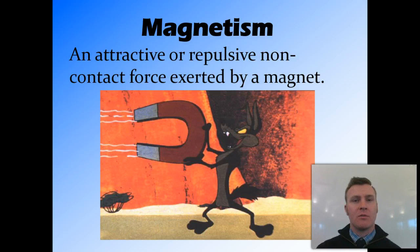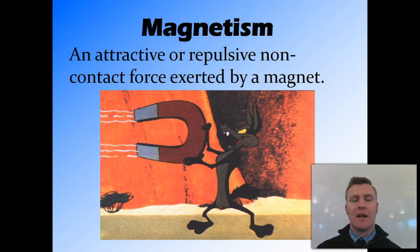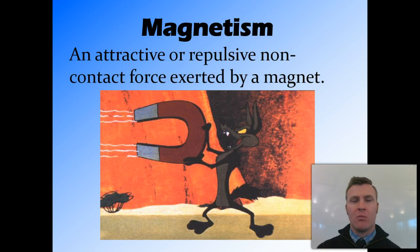Going a couple of videos back, we talked about contact forces and non-contact forces. Magnetism is an example of a non-contact force that can work as an attraction or a repulsion — a pull or a push — over a distance. We call the distance that the magnetism works over the field of influence.